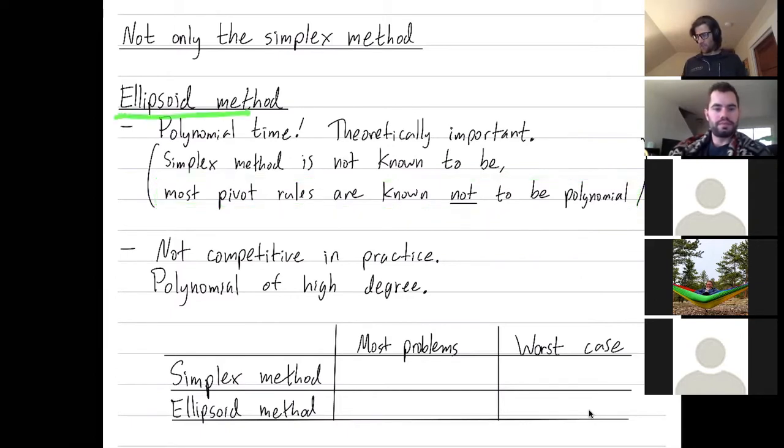So being the first method to run in polynomial time, the ellipsoid method is quite theoretically important. Just both from this theoretical observation that you can solve any linear programming problem in polynomial time.